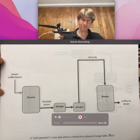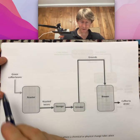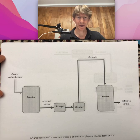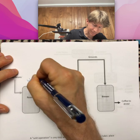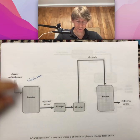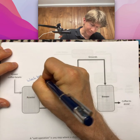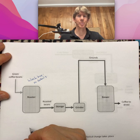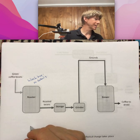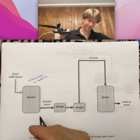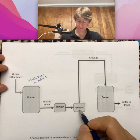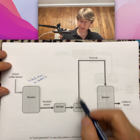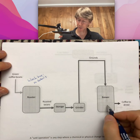We'll start with the most simple process flow diagram. You start with green coffee beans, put them in the roaster — treating the roaster as a black box with no details inside — and out come roasted beans. Those roasted beans go into storage, then to a grinder, where the beans become grounds, and then into the brewer, also a black box.